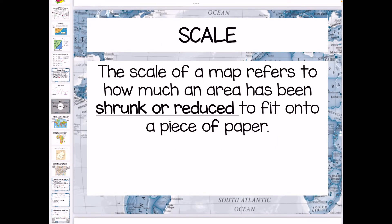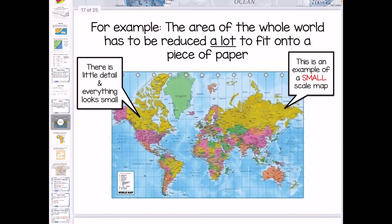The next thing we're going to cover is scale, which is really, really important and something you definitely have to understand. The scale of a map refers to how much an area has been shrunk or reduced to fit onto a piece of paper. When talking about scale, we either get smaller scale maps or larger scale maps. Here's an example of a world map — the world is a very big place that has to be reduced many, many times to fit. That is an example of a small scale map; there's very little detail and everything looks much smaller.